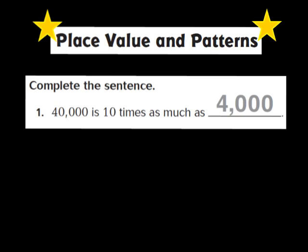Let's start out together by taking a look at question number 1. As you can see, question number 1 has already been completed for you, but it's a good model for our Place Value and Patterns lesson. Question 1 says: 40,000 is 10 times as much as 4,000.